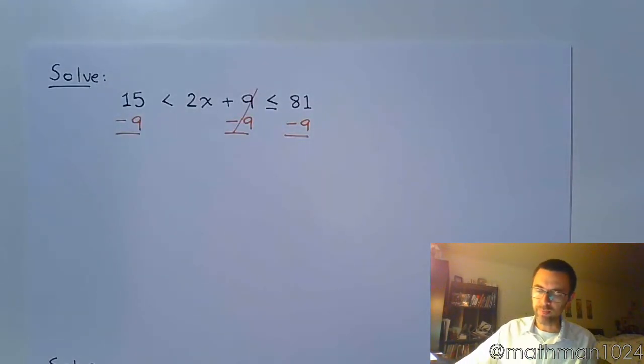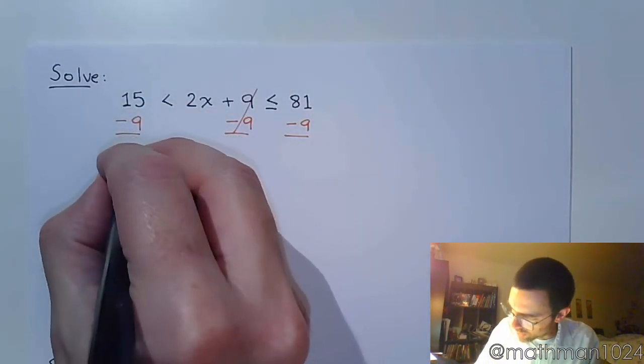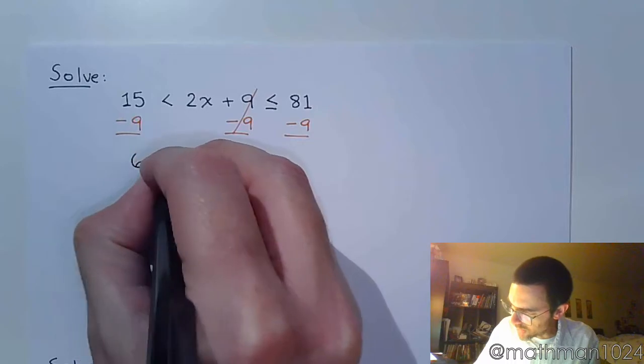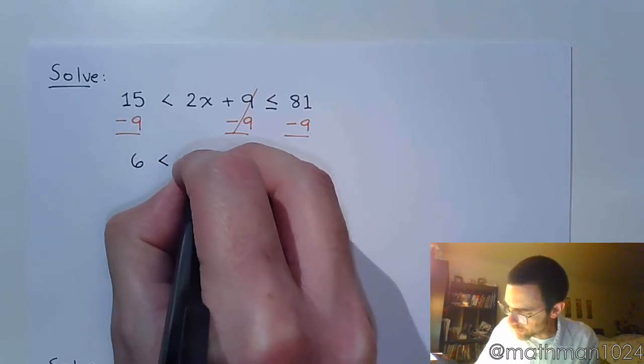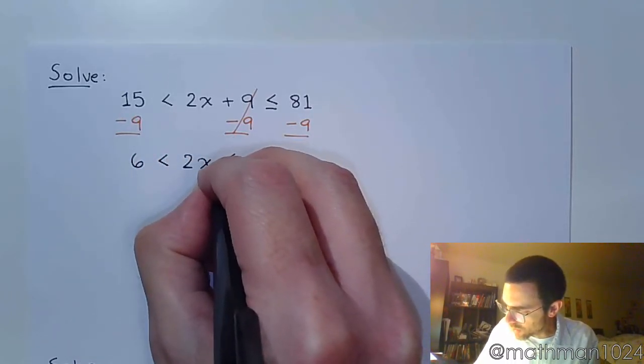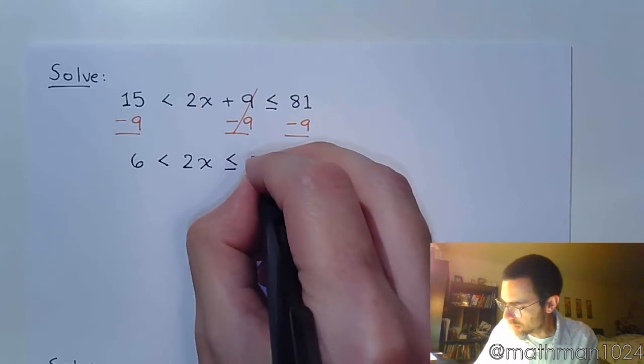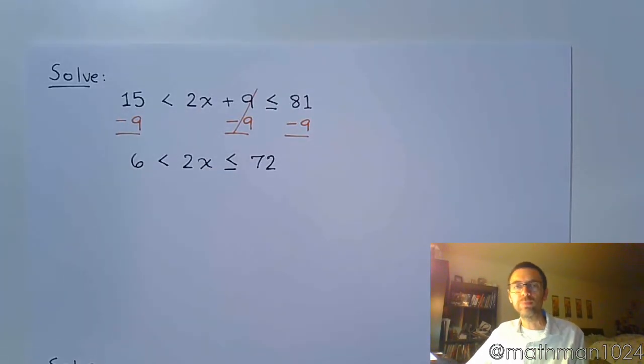So, those guys go away. We now have 6 is less than 2x, which is less than or equal to 72. And then, what's the last step that you would take to get x by itself in the middle?